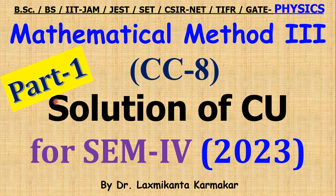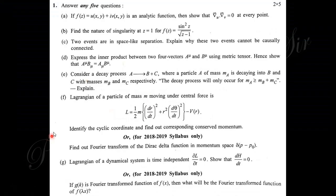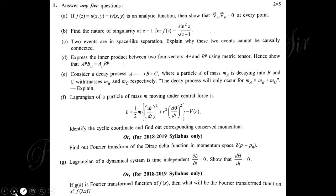Hello, welcome everyone. This is Part 1 of the solution to paper CC8, Mathematical Methods 3, for the year 2023 under the University of Calcutta Physics Honours. You can see the total question paper for Mathematical Methods 3, CC8, Semester 4. There are questions 1a to 1g, then questions 2 through 7. I request all of you to try solving these questions yourself before watching the solution. In this video we solve question 1a to 1g; upcoming sessions will cover questions 2 through 7.